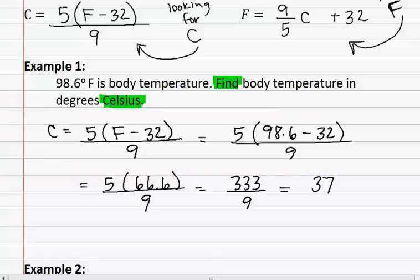Remember, your answer is not thirty-seven. It is thirty-seven degrees Celsius. You must label your answer with the appropriate degrees, as we are converting between two degreed units.